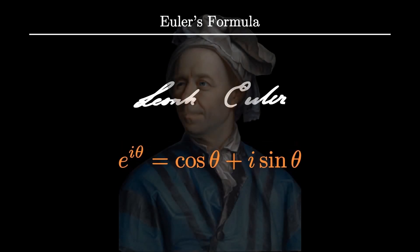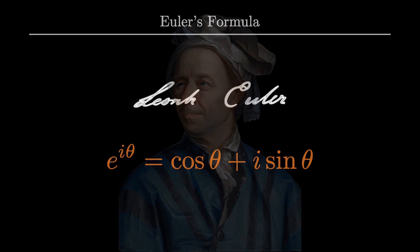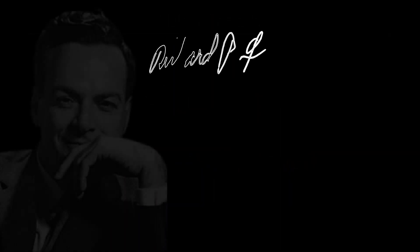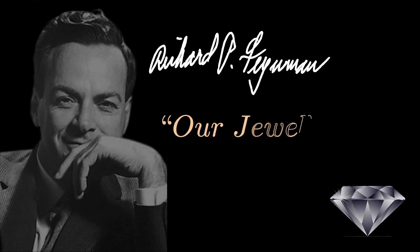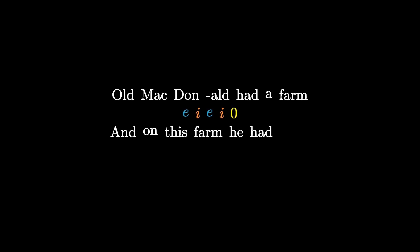And if evaluated at θ equals π, you get the most beautiful equation in mathematics. And it is so popular that Richard Feynman even called it our jewel. And it's so popular that there's even a children's rhyme. Old MacDonald had a farm, E-I-E-I-O, and on this farm he had some pigs, E-I-E-I-O.